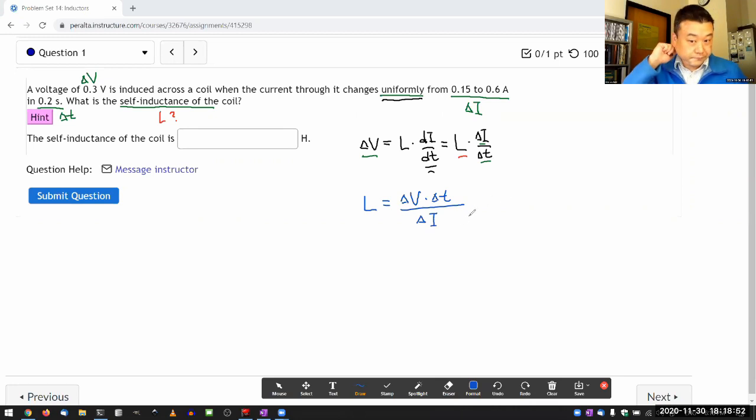And that's it. The change in current isn't technically given directly—you have to do the subtraction to get 0.45 amperes. So you plug the numbers into this expression.